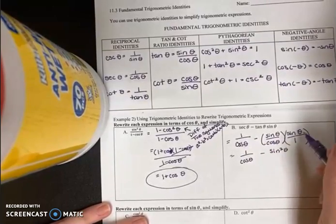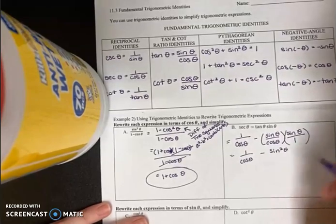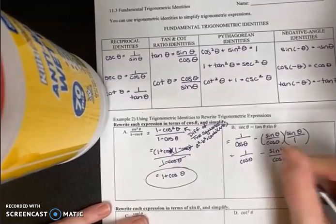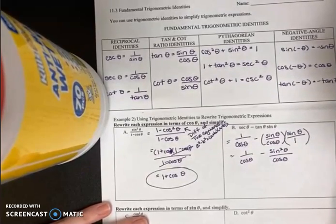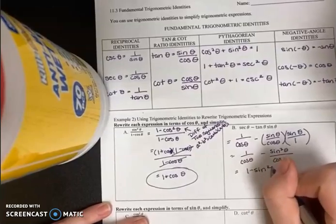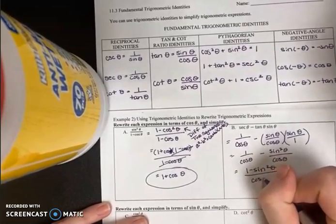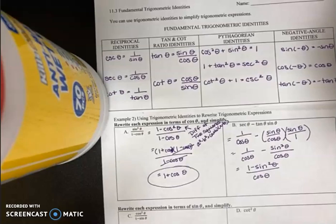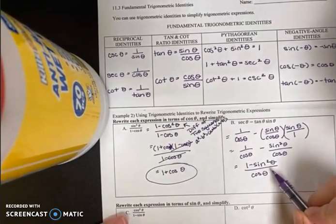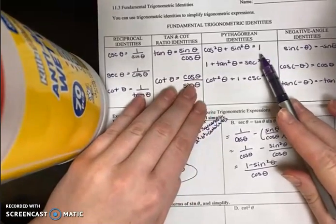Just like how x times x is x squared, sine times sine is sine squared, all over cosine theta, because cosine theta times one is cosine theta. Whenever you want to add or subtract fractions, they must have a common denominator — these do. So I can condense this to one minus sine squared theta over cosine theta. I still haven't written my final answer in terms of only cosine, so I need to replace this one minus sine squared theta.